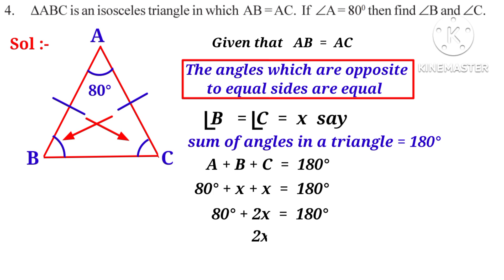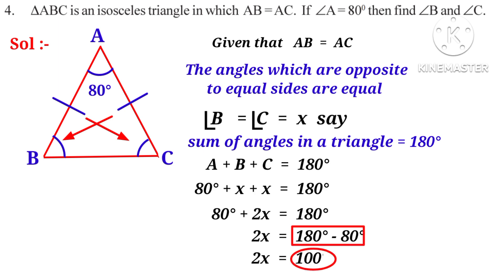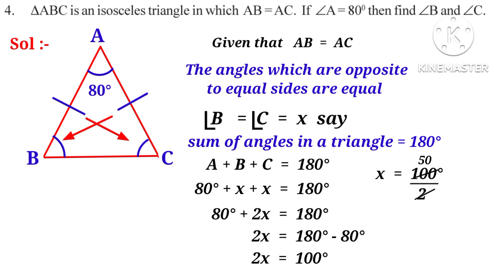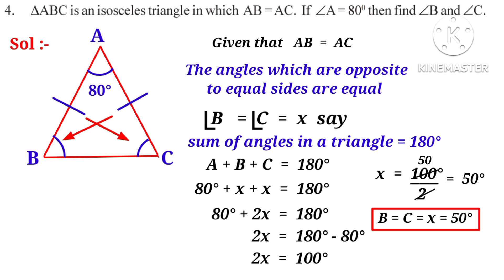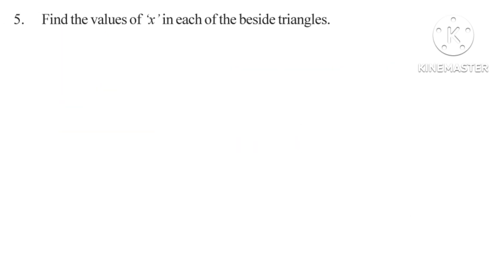Then 2X is equal to 180 degrees minus 80 degrees, so 2X is equal to 100 degrees. Therefore X is equal to 100 divided by 2, which equals 50 degrees. So angle B and angle C are both equal to 50 degrees.